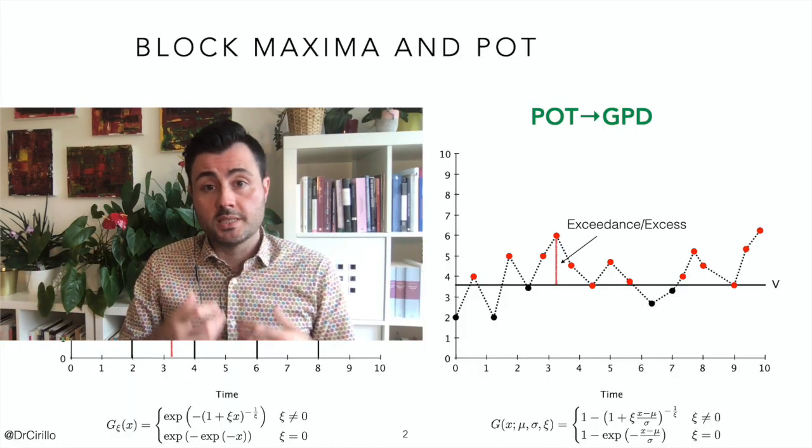For the moment, it is sufficient to say that we have a series of observations, we split them into blocks, and for each block we take the maximum value so that we have a collection of maxima. Given this collection of maxima, if properly normalized using the constants a_n and b_n that we saw last time, then the limiting distribution of these normalized maxima is actually a GEV — a generalized extreme value distribution. In the peaks over threshold approach, as the name suggests, we do something different.